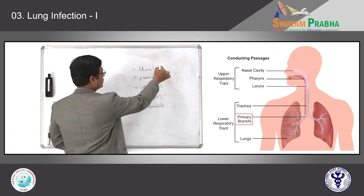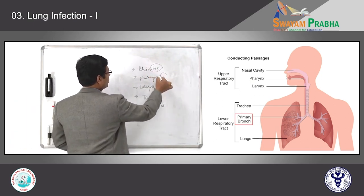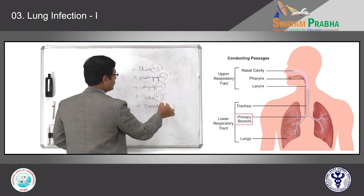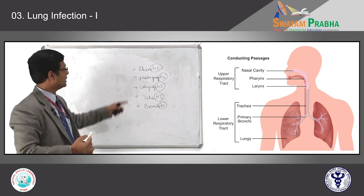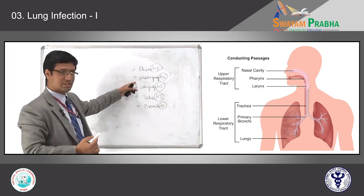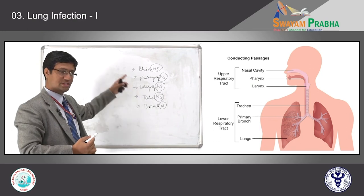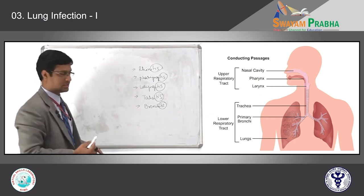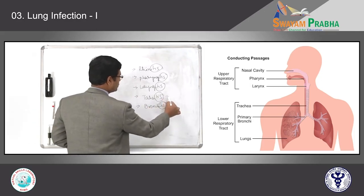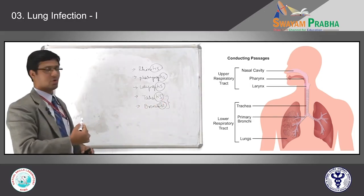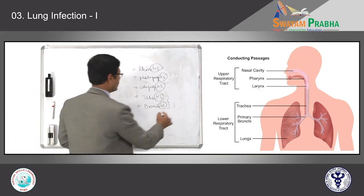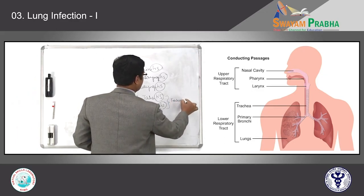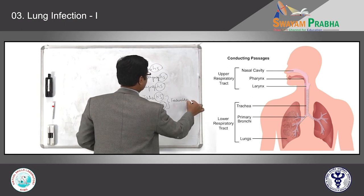If you recollect your general pathology, whichever organ is inflamed, we put '-itis' at the end — rhinitis, pharyngitis, laryngitis, tracheitis, bronchitis. Most of the time, inflammation of the trachea and bronchi occur together, and we call that tracheobronchitis.